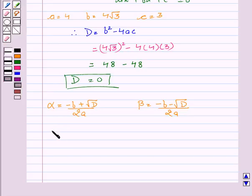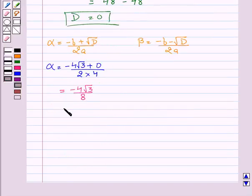α = (-4√3 + 0)/(2×4). This gives α = -4√3/8. On canceling, we get α = -√3/2.